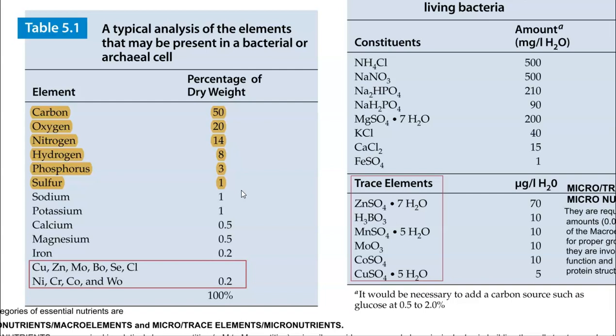Carbon is the dominant element in the cell system, comprising 50% of the dry weight of cells. The next is oxygen at 20%, and nitrogen — important for protein formation — occupies 14%. Hydrogen occupies 8%. Phosphorus and sulfur, which are major anion-form nutrients, occupy 3% and 1% respectively.